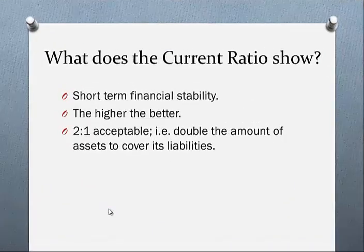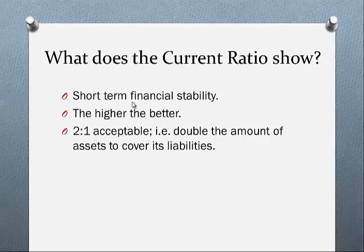What does the current ratio show? It shows short-term financial stability. The higher the better — 2 to 1 is acceptable, which means double the amount of assets to cover liabilities. So 2 to 1 is comfortable.